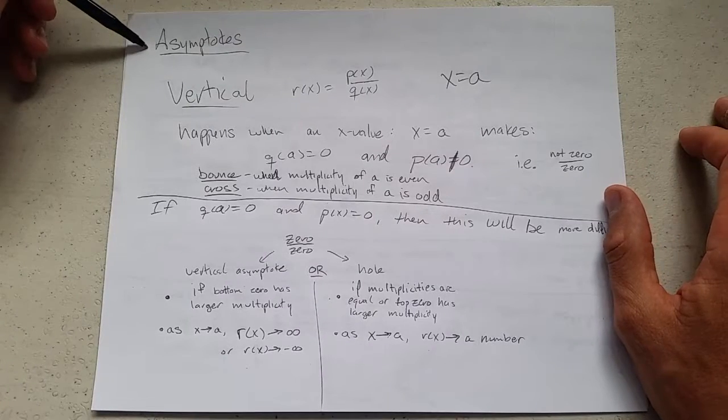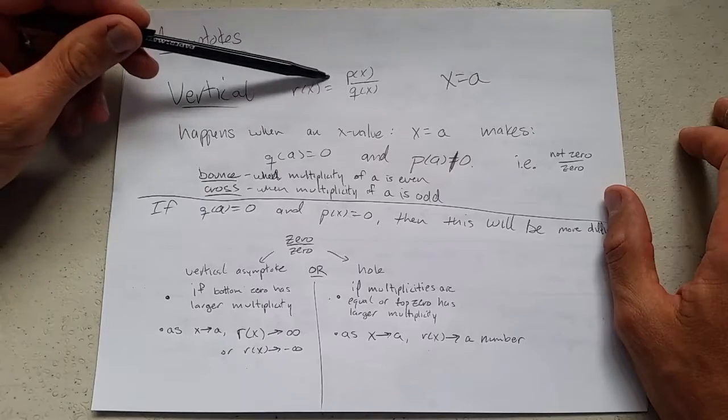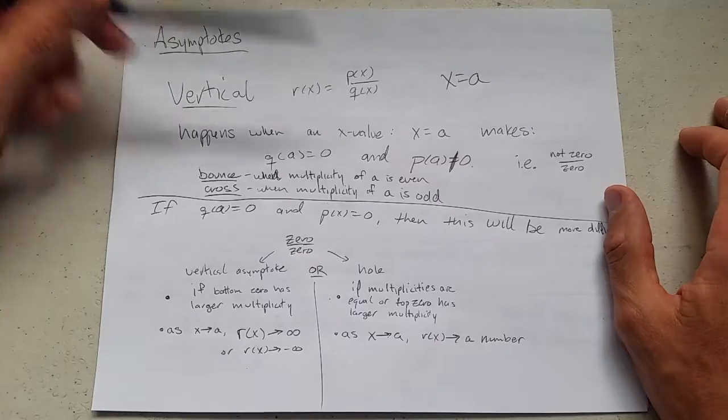A new word is asymptotes. We're going to do vertical asymptotes first. You have your rational function, one polynomial divided by another polynomial.